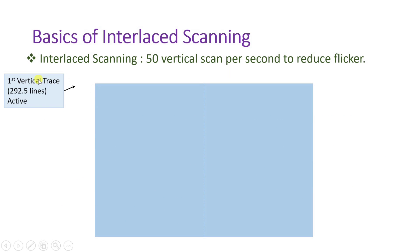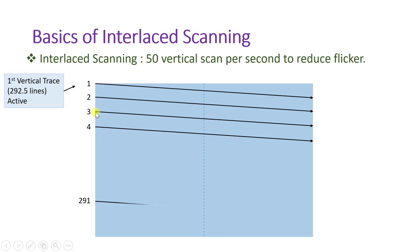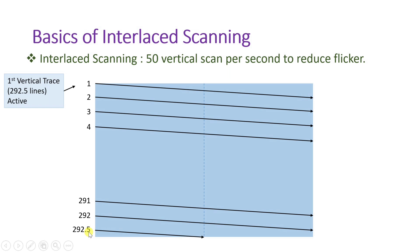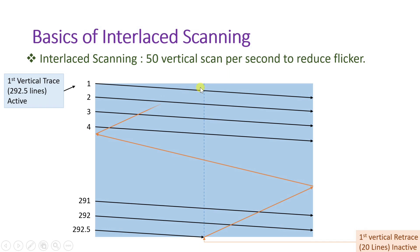For the first vertical trace, scanning begins from the top: first line, second line, third line, fourth line — up to 292.5 lines, ending at the center. This is the first vertical trace with 292.5 active lines. From there, there is a bottom-to-top vertical retrace with 20 inactive lines, returning to the top of the display.